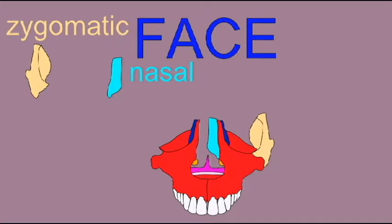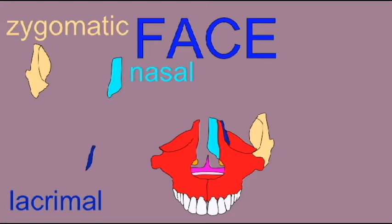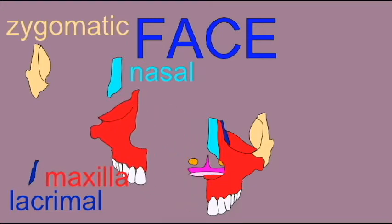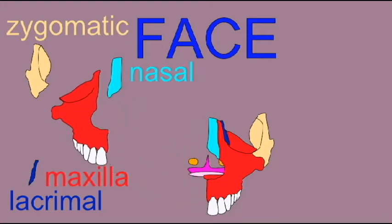The large maxilla, or maxillary bone. This contains all of the teeth of the upper jaw, comprises much of the inferior orbit, and surrounds much of the nasal cavity. The vomer, which composes part of the nasal septum.